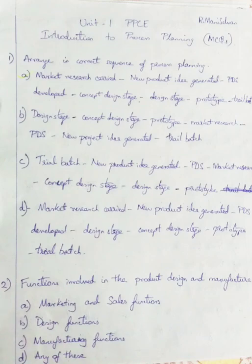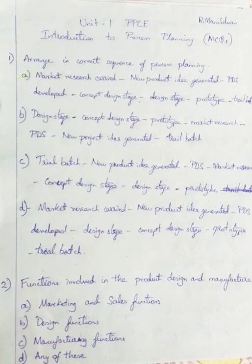Option C: Trial Batch, Product Idea Generated, PDS, Market Research, Concept Design Stage, Design Stage, Prototype. Option D: Market Research Carried, New Product Idea Generated, PDS Developed, Design Stage, Concept Design Stage, Prototype, Trial Batch.